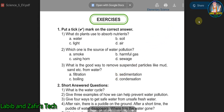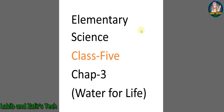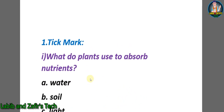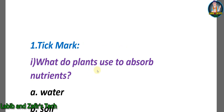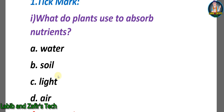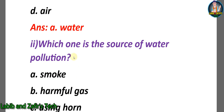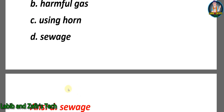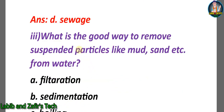Now let's go through the exercises part of Chapter 3 Water for Life. Tick mark question number one: What do plants use to absorb nutrients? A) Water, B) Soil, C) Light, D) Air. The answer is A) Water. Question two: Which one is a source of water pollution? A) Smoke, B) Harmful gas, C) Using horn, D) COD. The correct answer is D) COD.